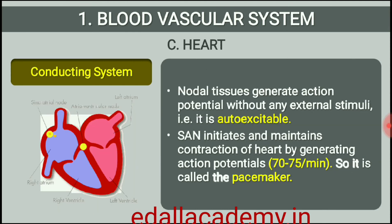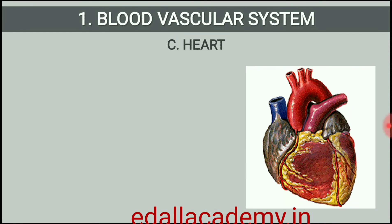The nodal musculature has the ability to generate action potentials without any external stimuli, that is, it is auto-excitable. However, the number of action potentials that could be generated in a minute vary at different parts of the nodal system. The SAN can generate the maximum number of action potentials, that is, 70-75 per minute, and is responsible for initiating and maintaining the rhythmic contractile activity of the heart. Therefore, it is called the pacemaker. Our heart normally beats 70-75 times in a minute, average 72 beats per minute.